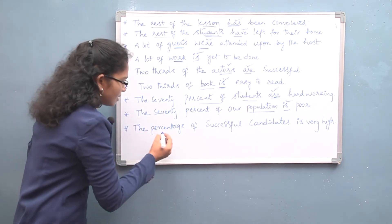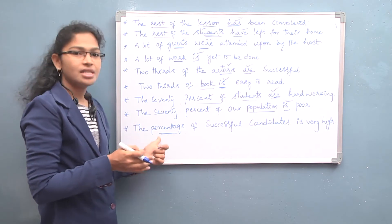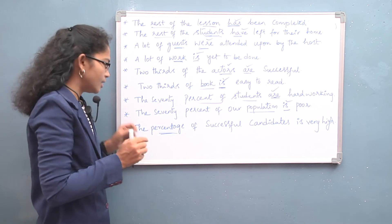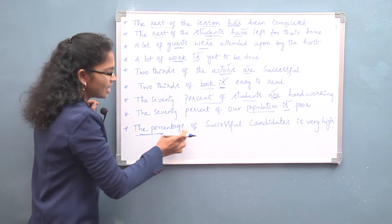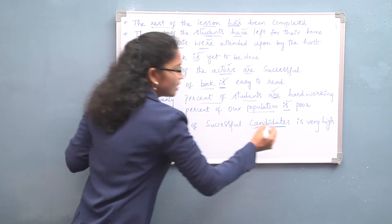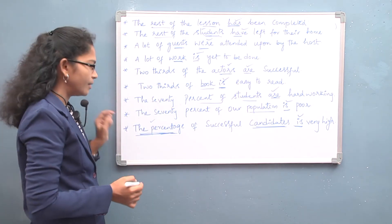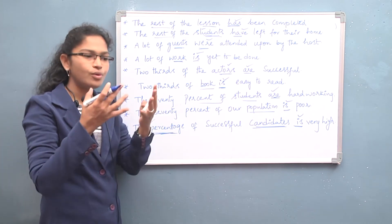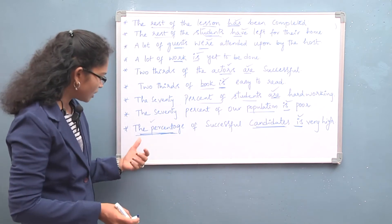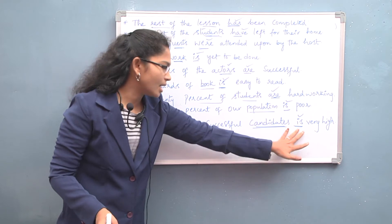There is a special case with 'percentage'. Whenever 'percentage' appears as the subject, the verb comes according to 'percentage' itself, not the following noun. For example: 'The percentage of successful candidates is very high.' Even though 'candidates' is plural, we use 'is' because the verb follows 'percentage', which is singular.